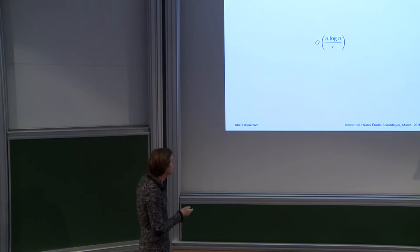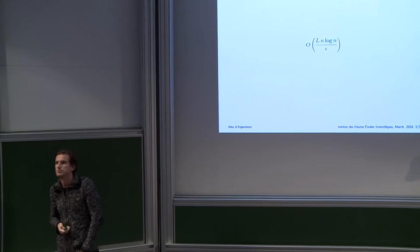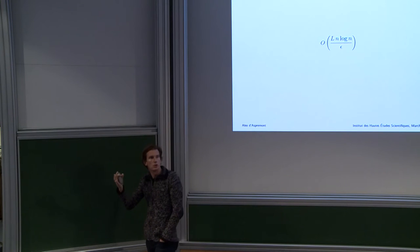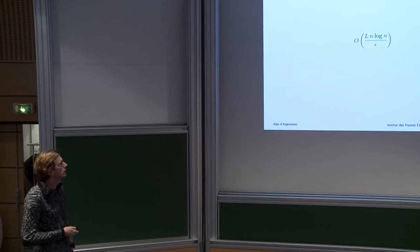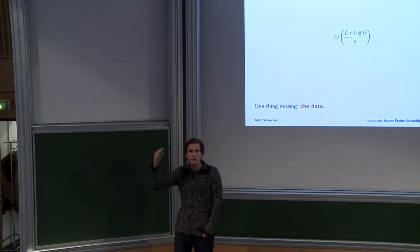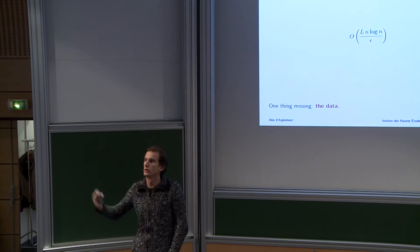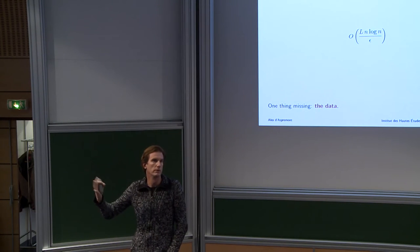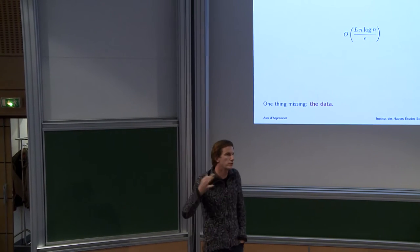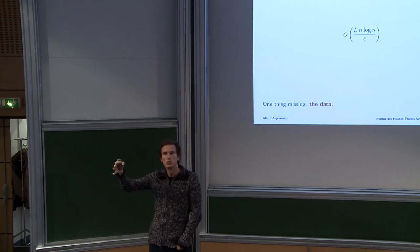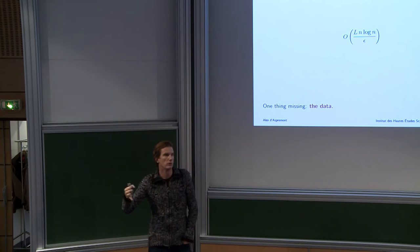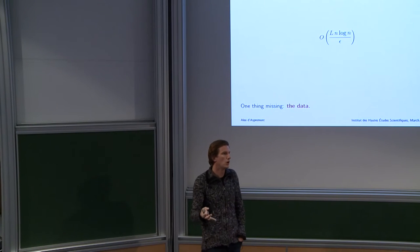If you're lucky the bound looks a little more like this — you have a Lipschitz constant and at least some dependence on the problem structure. But one important thing is missing from this complexity bound: the data. The complexity bound you get on the convex optimization problem you're solving only very loosely depends on the problem data.